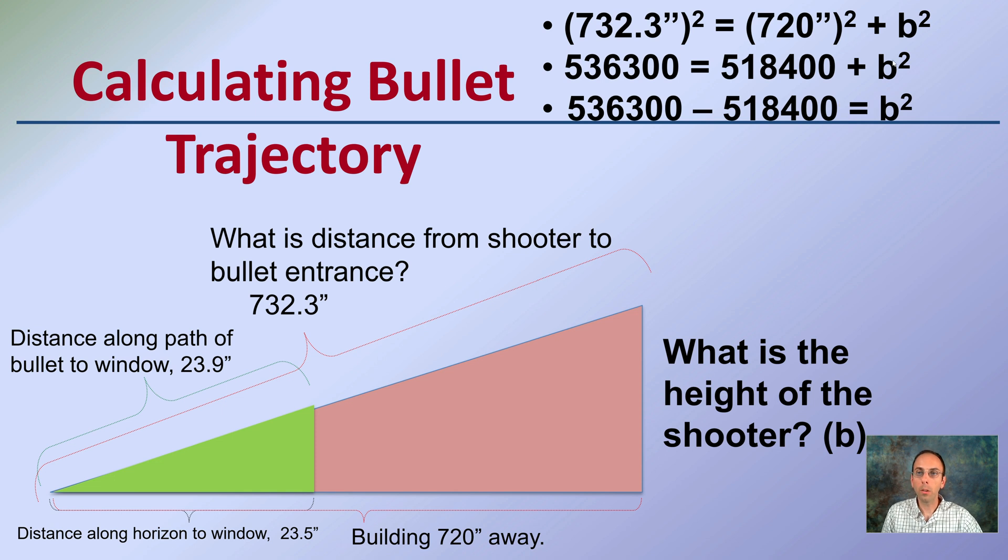We square those, then we subtract those two, we get b squared. This distance squared equals 17,900. We take the square root of that and b will be 133 inches. So what's the height of the shooter for b? It would be 133 inches.